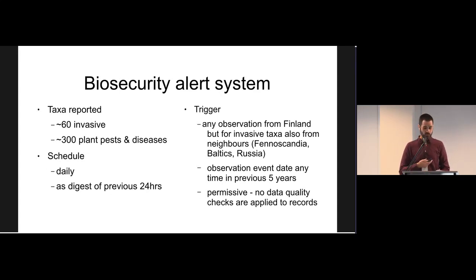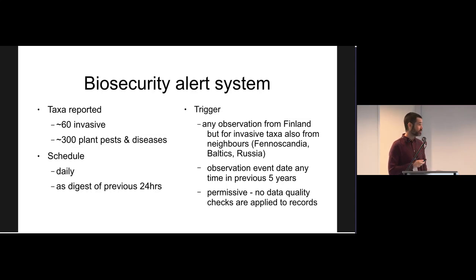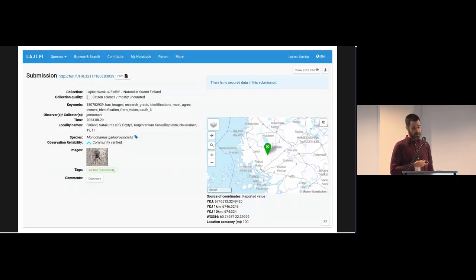To dive deeper into the details: we send alerts for about 60 invasive taxa and for a list of about 300 plant pests and diseases. Alerts are sent on a daily basis as a digest of all observations submitted to FIMBIF in the previous 24 hours. Alerts are triggered by any observation that occurs in Finland, but for invasives it also includes observations from neighbouring countries in Fennoscandia, the Baltics, and Russia. Observations where the event occurred any time in the previous five years trigger an alert, and we don't do any automated or manual quality checks before sending. An alert consists of a simple list of occurrences with taxa names and links to the observations in our web portal, where the receiver can review all data including photos, time, location, etc.